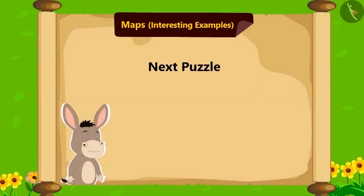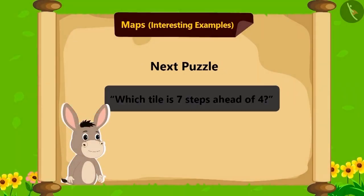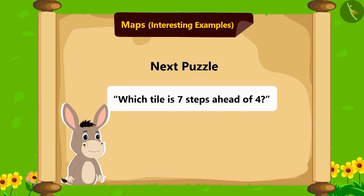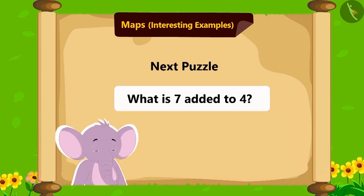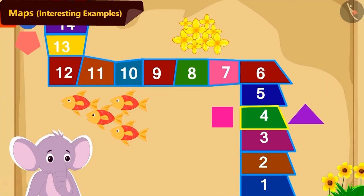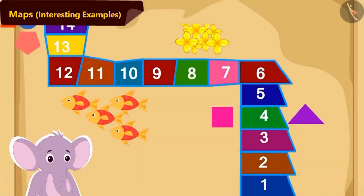Bholla's next puzzle is, which tile is 7 steps ahead of tile number 4? Children, do you know its answer? How much is 7 added to 4? 11. 7 steps ahead of 4 is tile number 11. Now, how will Appu reach tile number 11 from number 4 tile?